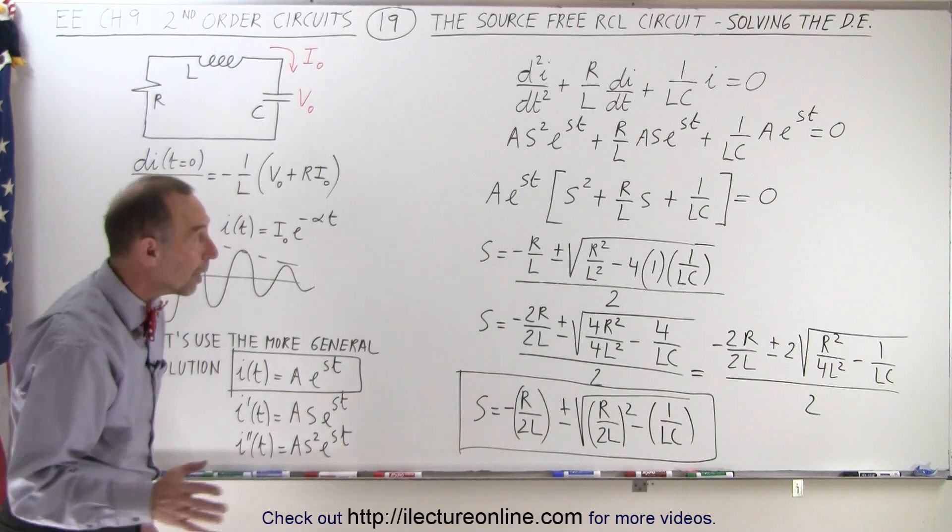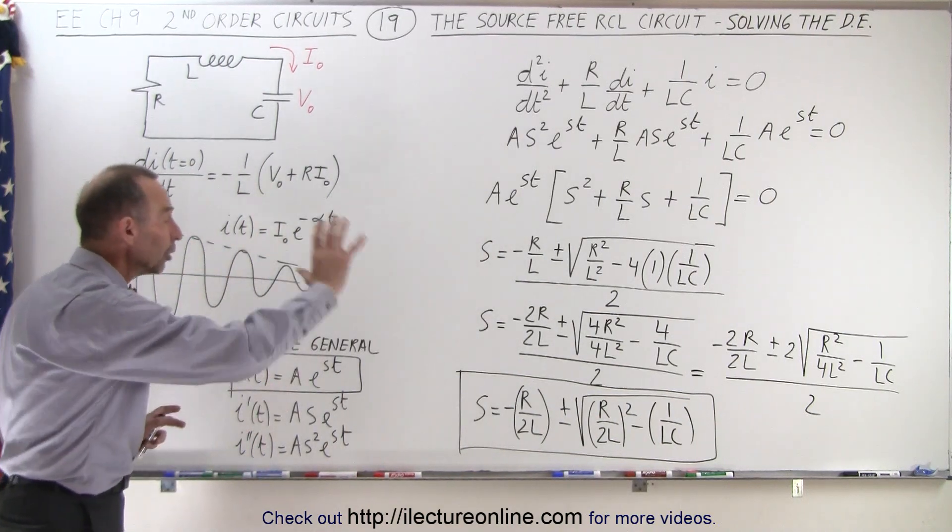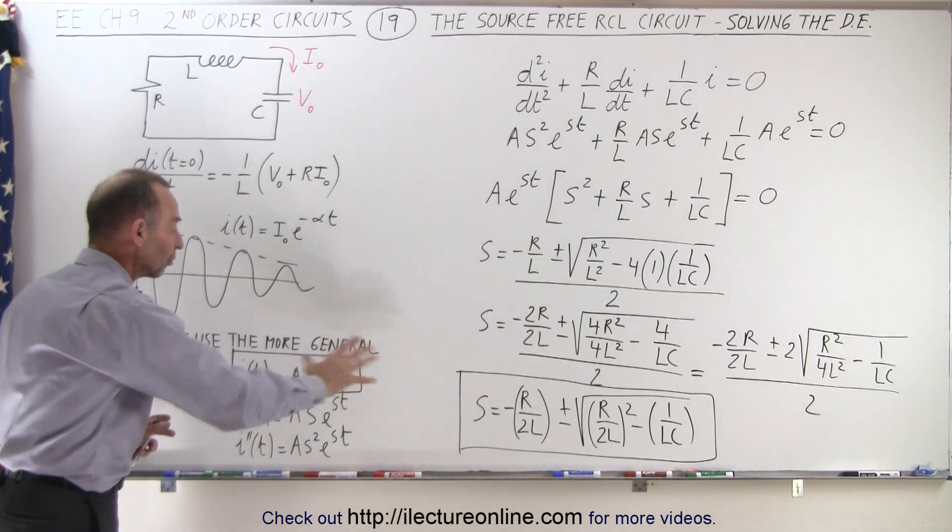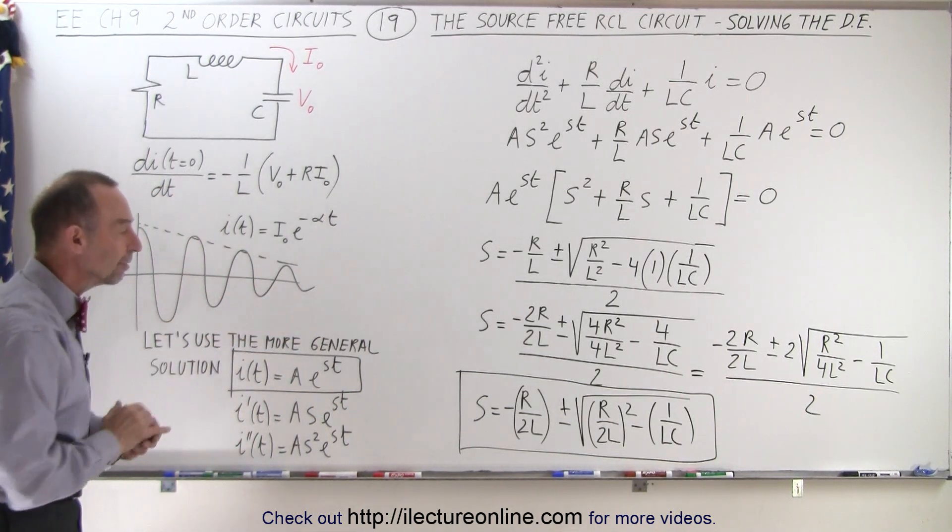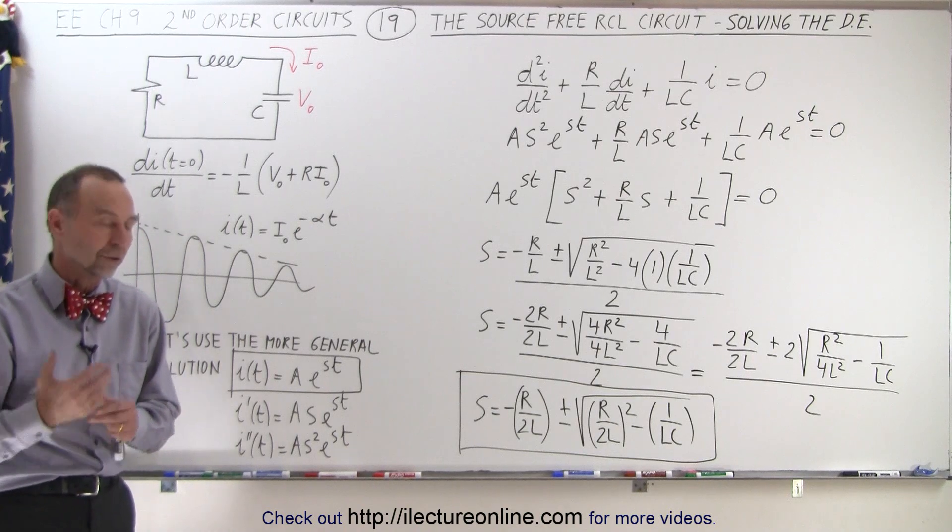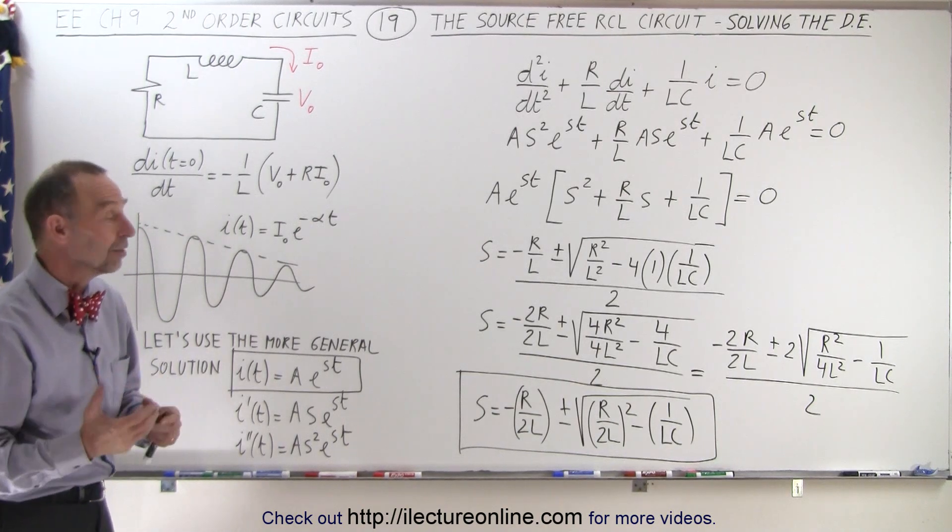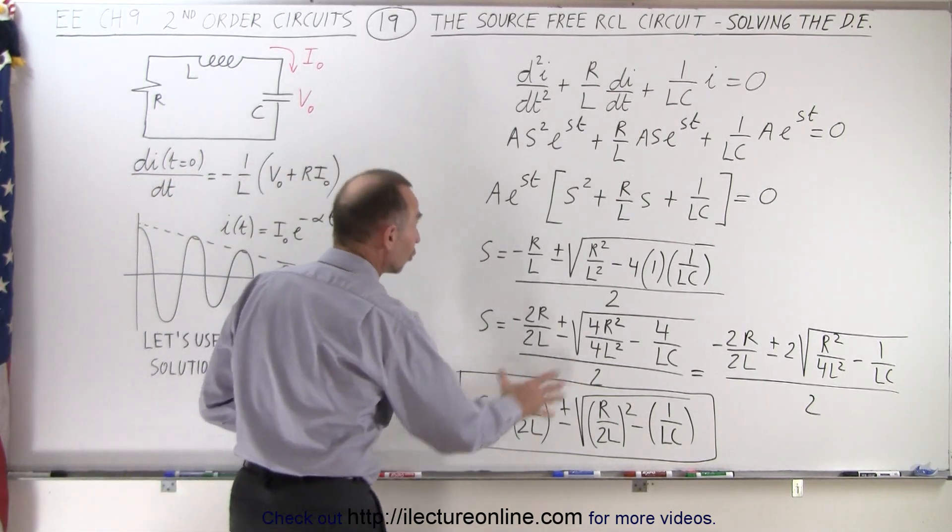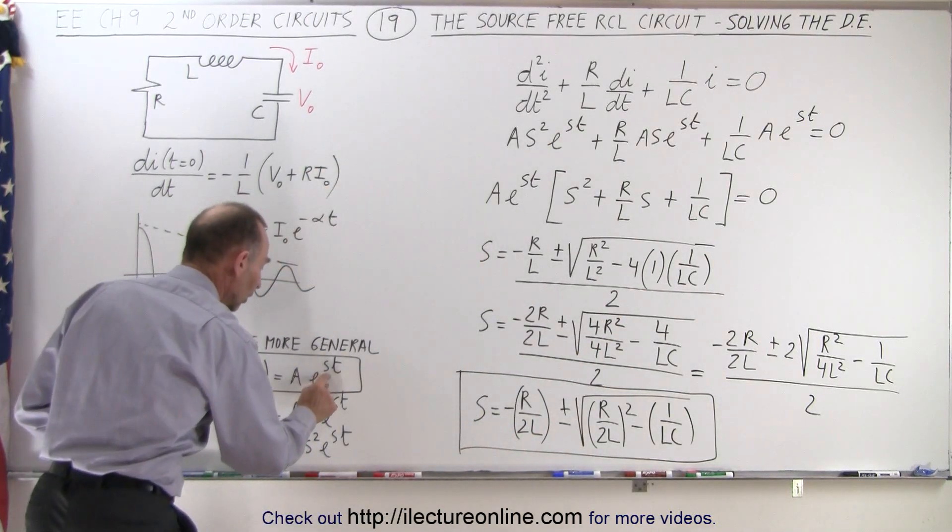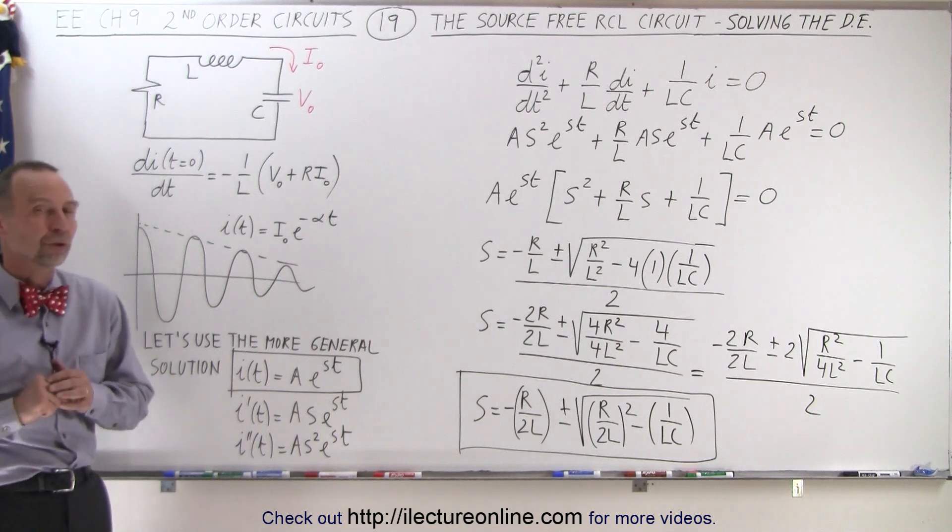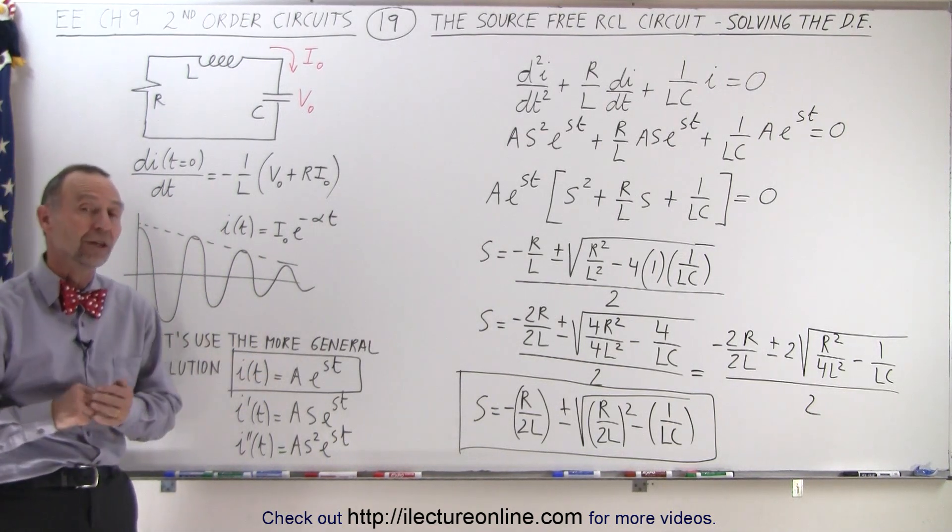And so what we're going to do now is in the next video, we're going to take a look at how we can interpret that solution and what kind of equations we're going to end up with depending upon the values for the resistor, the inductor, and the capacitor. At least, this is a solution to our general differential equation as it belongs to our exponent right here in the equation for the current. So that is how that's done.